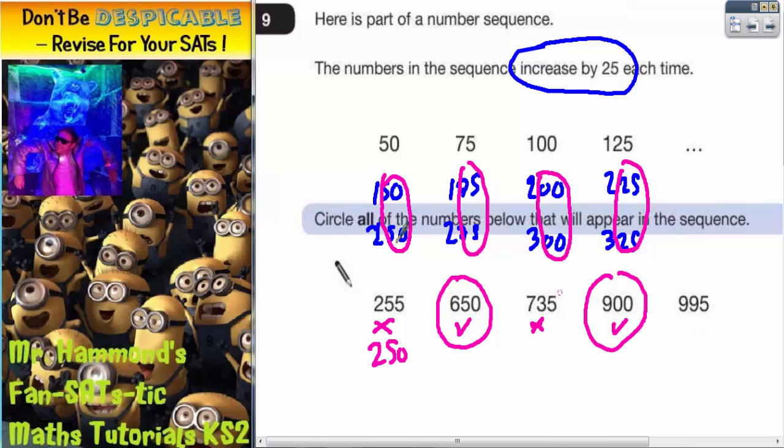And this one ends in 95, which again is not in the allowable digits. So this one doesn't. So there we have it. Two of the numbers out of the choice will appear in the sequence. 650 and 900. It's all about checking those last two digits.